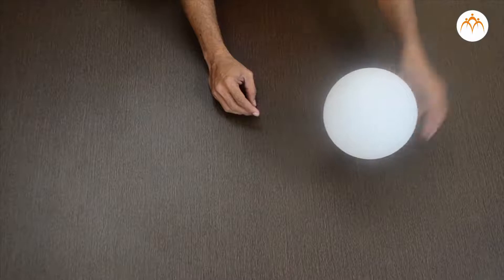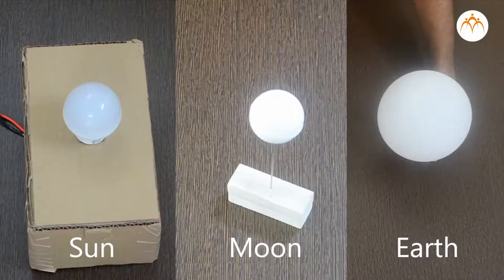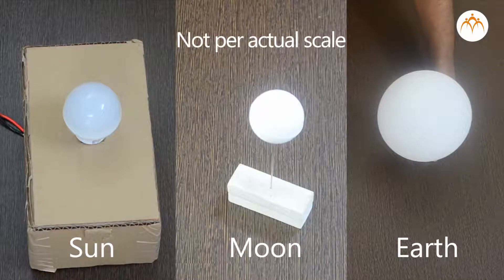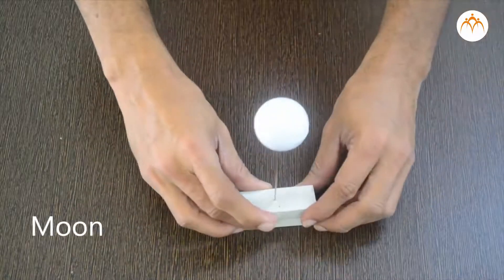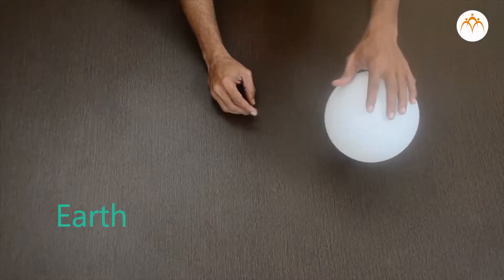These objects are not as per the actual scale, but it will help us to understand the phenomenon. The bulb represents the light source, that is the sun. The small ball represents the moon, and the balloon is our Earth.